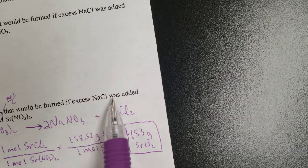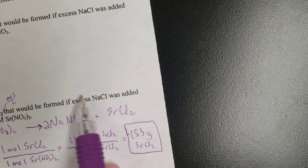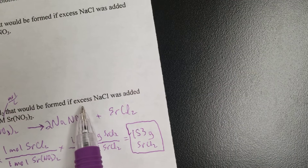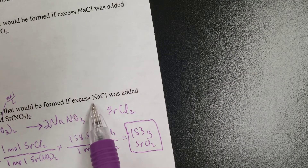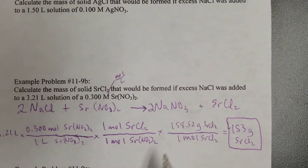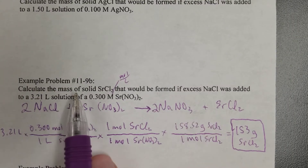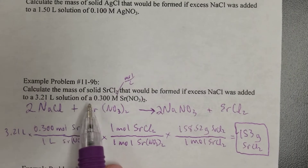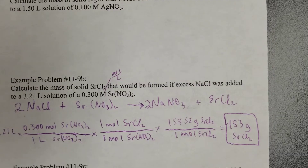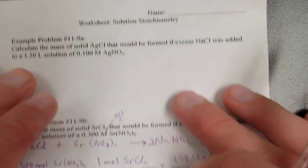When it says excess NaCl, that's another way of saying don't worry about including it in the calculation — you've got enough that you're not going to run out. It just means NaCl is the excess reactant, and Sr(NO₃)₂ is the limiting reactant, which determines how much you make. That's how you handle that question.